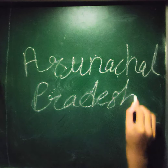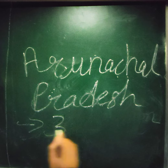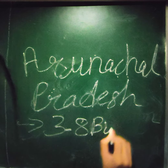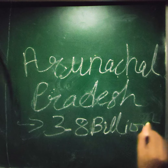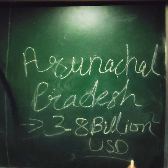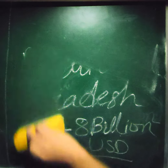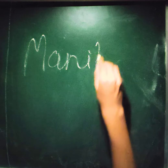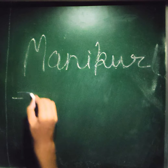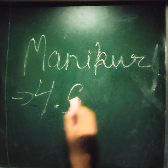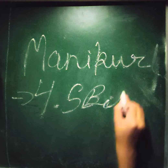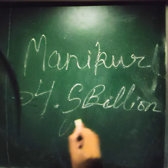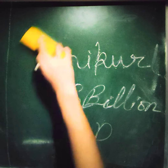Arunachal Pradesh has a GDP of 3.8 billion US dollars. The next state is Manipur, with a total GDP of 4.5 billion US dollars.